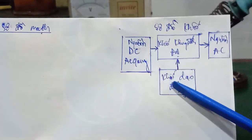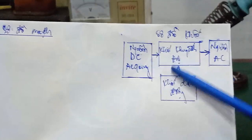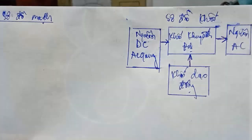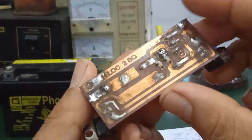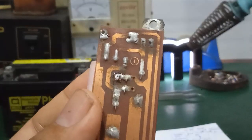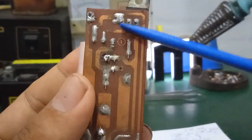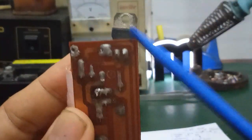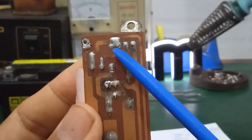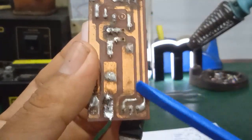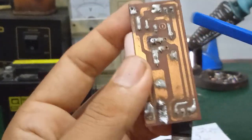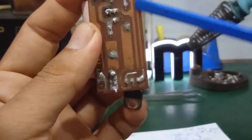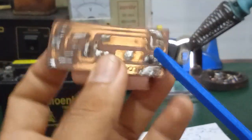Thì đây là cái sơ đồ khối chung chung thôi, còn mình sẽ đi chi tiết vào cái sơ đồ mạch. Mình sẽ dò mạch vào vẽ mạch này. Đây là 2 con transistor công suất NPN, cái chân của nó là chân B, chân C, chân E. 2 con transistor này, cái chân E của nó nối chung với nhau. Các bạn theo đường mạch, nó đi qua đây - E chung.